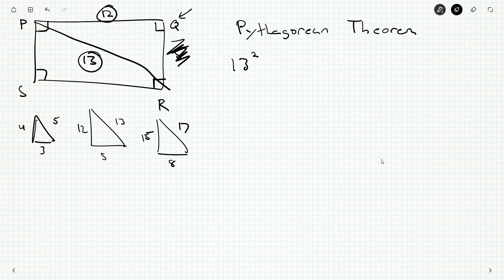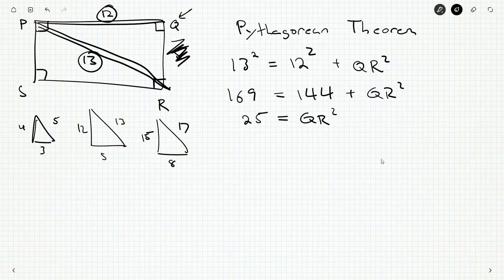Well, the Pythagorean theorem tells me that 13 squared, the hypotenuse, so that's PR, has got to be the sum of the squares of both the side lengths. So there's QR. I don't know what it is yet. But we get out our calculator, 169 is 144 plus whatever QR squared is. Subtract 144 from both sides, and you'll get QR squared is 25.